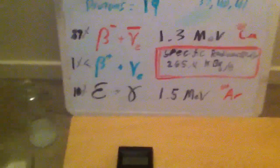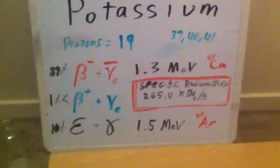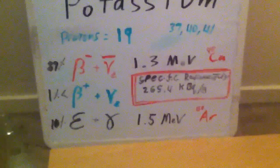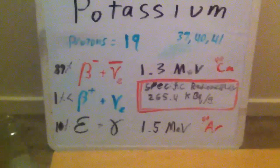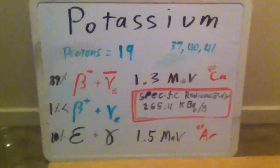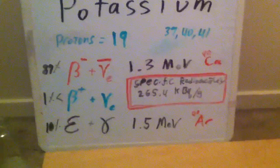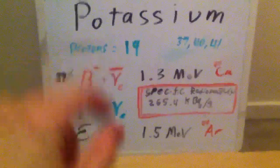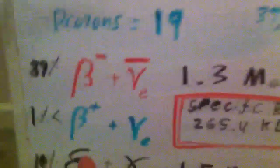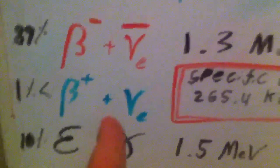I believe potassium-40 that undergoes positron emission puts off several hundred kilo- or mega-electron volts of positron energy and turns into argon-40, but I don't want to say that for certain — that's just off the top of my head. But I know the two other decay modes are correct. Technically speaking, potassium emits antimatter every now and then too — perfectly safe.